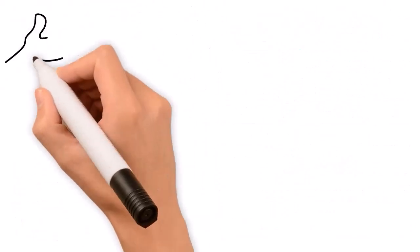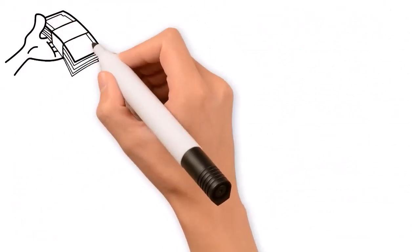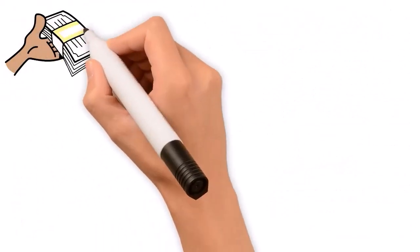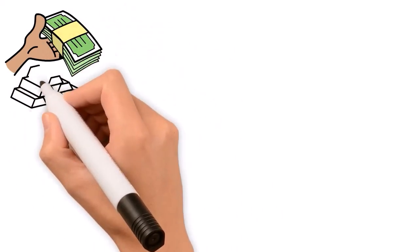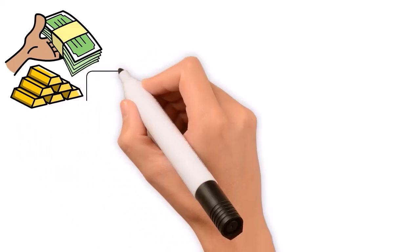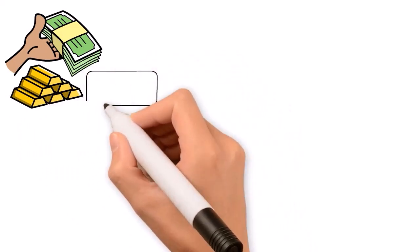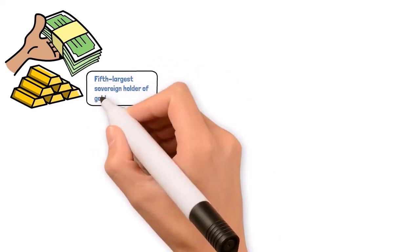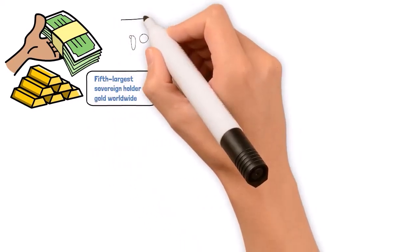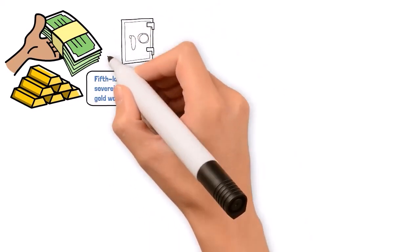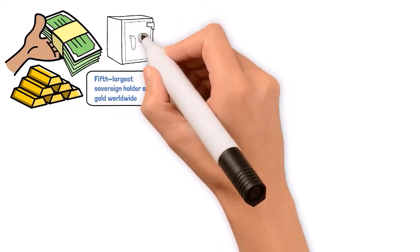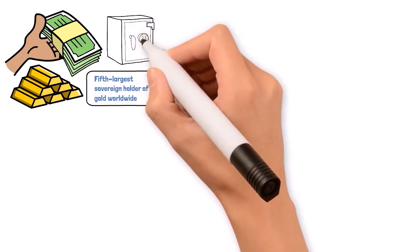After the curtain fell on the Cold War, Russia embarked on a quest to insulate its economy from the chill of international sanctions. A strategic maneuver like amassing gold is one of them. By 2020, Russia's gold reserves skyrocketed to a historic high, making it the fifth largest sovereign holder of gold worldwide. This precious metal serves as a bulwark against currency volatility and sanctions, offering a shimmering layer of financial security.